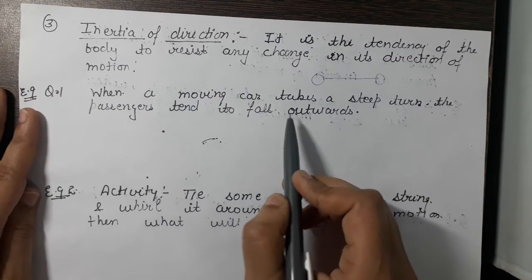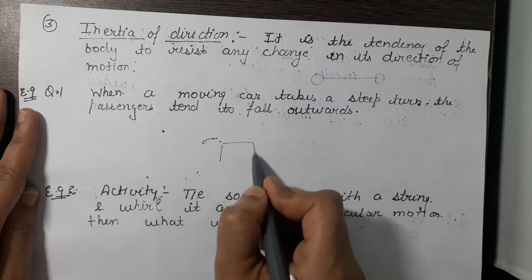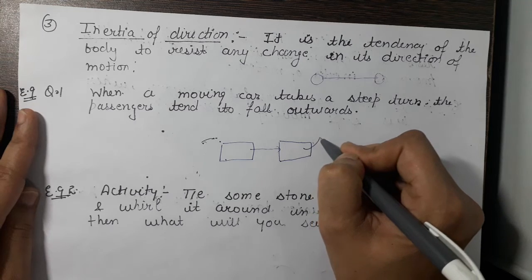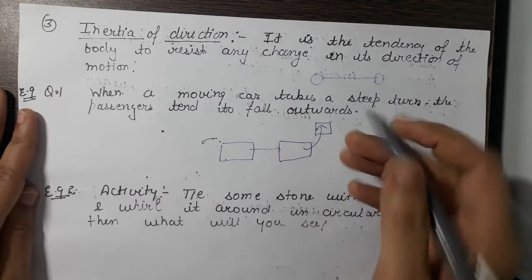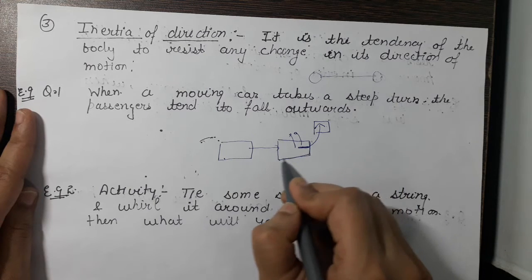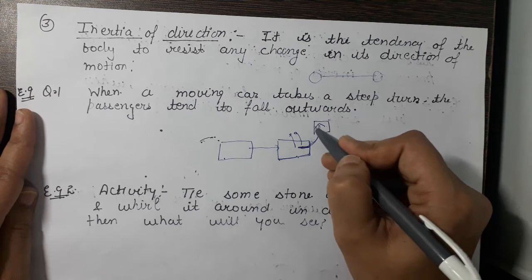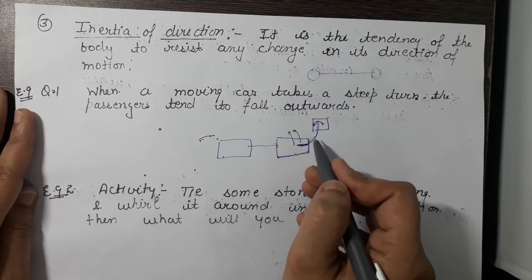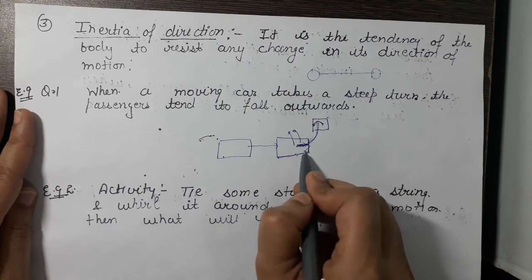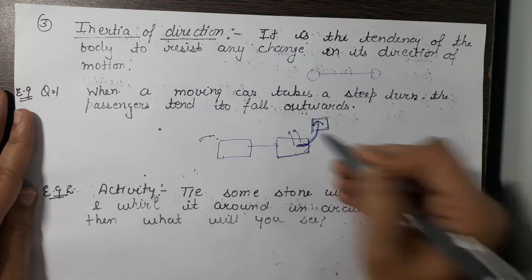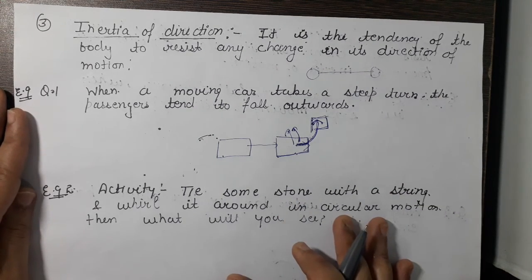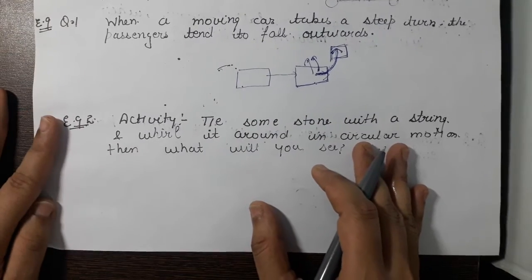Example of inertia of direction: when a moving car takes a steep turn, passengers fall outwards. This is because the passengers try to remain in the same direction — the straight forward direction — but suddenly the car turns. They resist the change in direction and always tend to remain going straight, so when the car's direction changes suddenly, they fall in the outward direction.